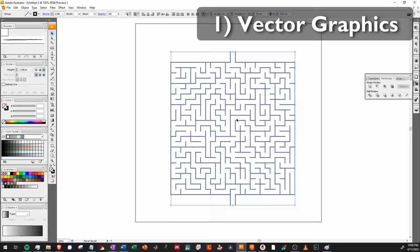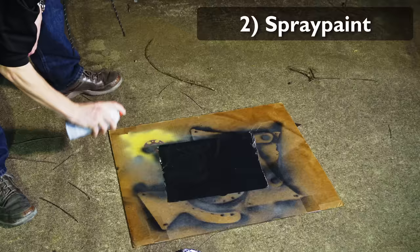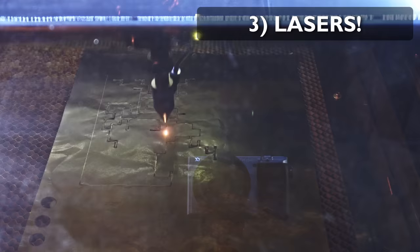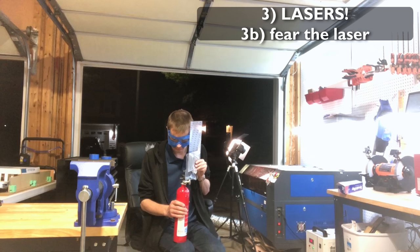Step one, load the maze into your vector graphics editor of choice. Thicken the lines and expand. Step two, take a sheet of aluminum foil and spray paint one side black. Step three, cut the maze out using an industrial laser cutter.